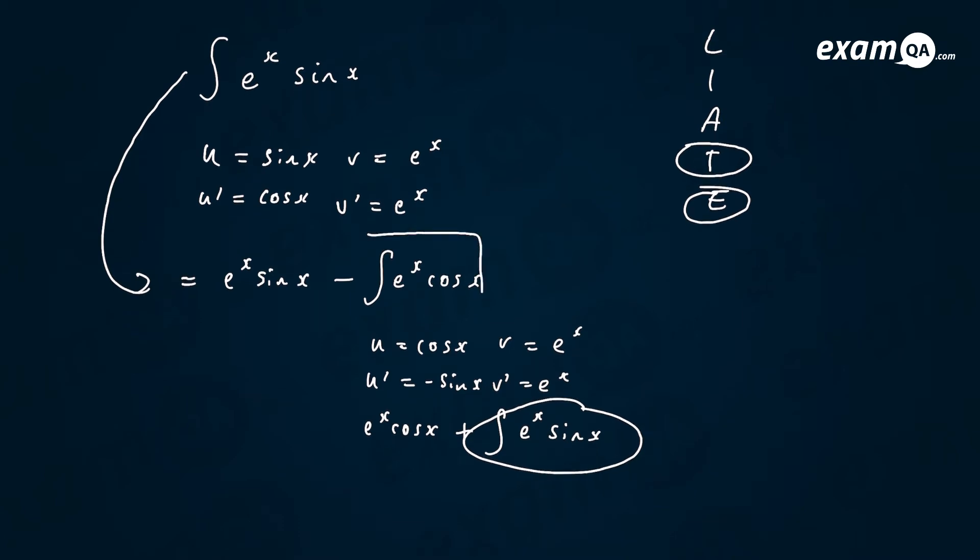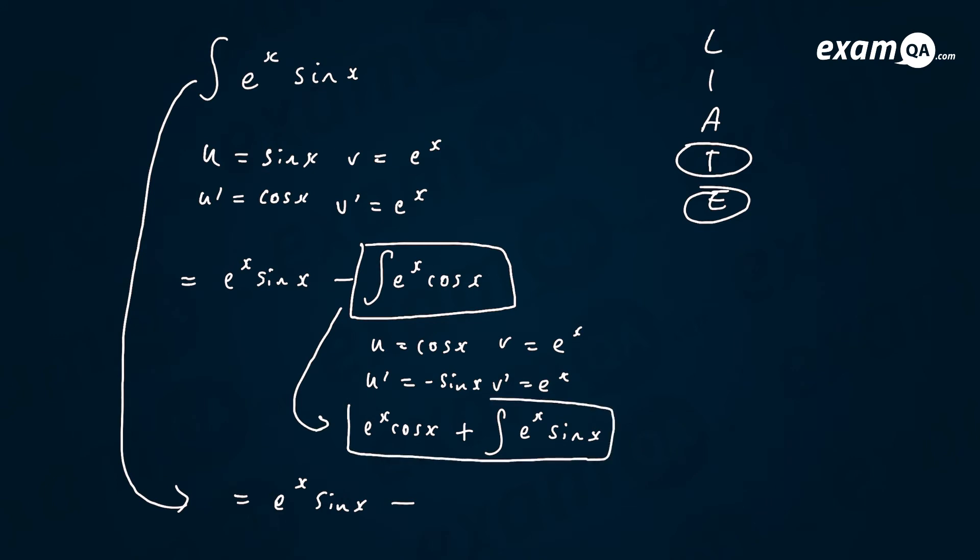We just worked out that this is the same thing as this. So what I'm going to do is I'm going to say this is the same thing as. We worked as e to the x sine x minus this thing, right? What did we work this thing out to be? This. Okay, so minus this, right?